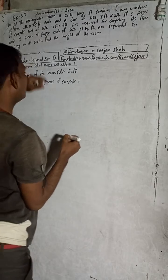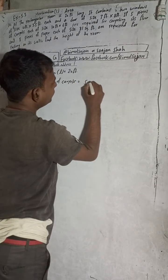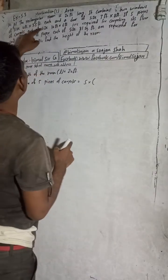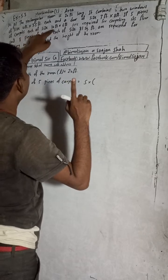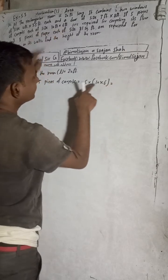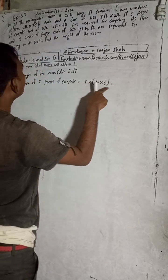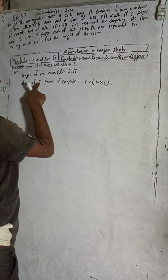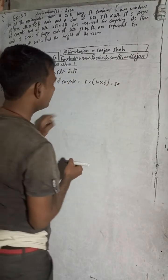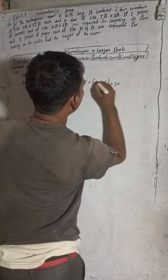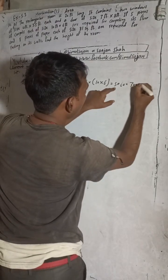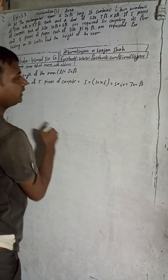Area of five pieces of carpets is equal to five multiplied by the length and breadth of one carpet. Each carpet is of size 10 feet by 6 feet, so area equals 5 × 10 × 6. Ten times six is sixty, and sixty times five is three hundred. So the area of five carpets is 300 square feet.